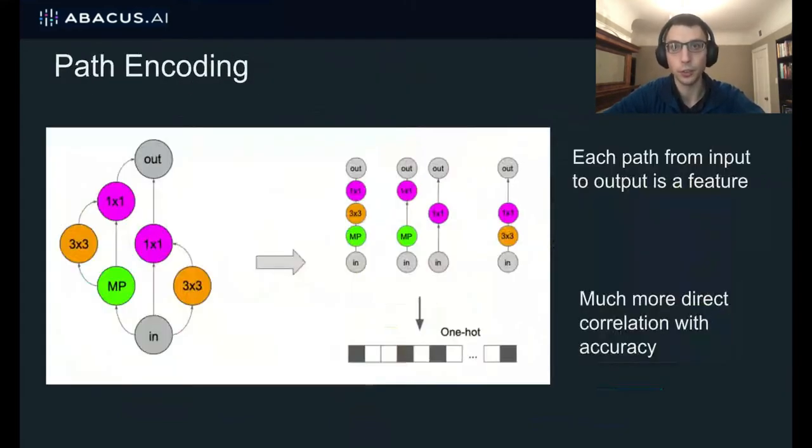And this is the motivation for us to design a new encoding in this work, which we call the path encoding. And the idea here is to have an encoding where each feature is directly correlated with accuracy and is not nearly as dependent on other features. So the definition of the path encoding is very simple. There is one binary feature for all possible paths in the search space. And for any architecture, each feature is set to one if the architecture contains that path. So in this example here, the architecture contains four paths from the input to the output, which are listed on the right. So these four paths are set to one. And as we might imagine, these paths have a much more direct correlation with the accuracy. For instance, the presence of a path that goes input one by one convolution and output might affect the accuracy of the architecture.